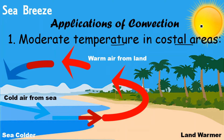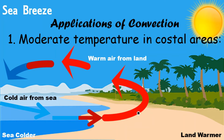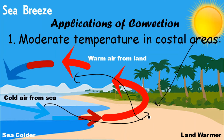During daytime, sunlight heats the land particles. These particles become lighter, start moving upward, and move from higher temperature toward the lower temperature of the sea. The hotter particles push the cooler sea particles toward the land. When the cooler particles reach the land, they are heated by the sun, move up again, go toward the sea, and push sea particles back toward the land.